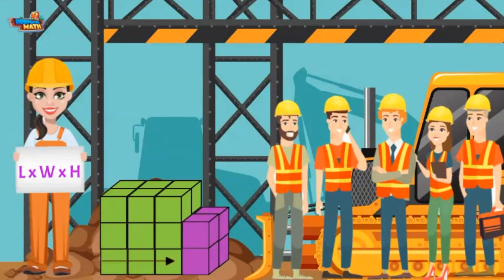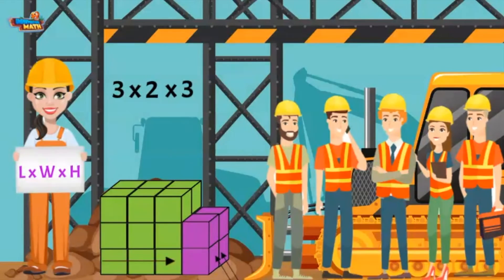The length of the green model is three cubes and the width is two cubes. Three times two equals six. There are three rows of six for a total of 18.